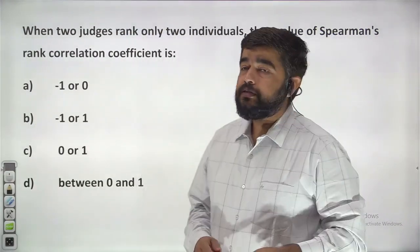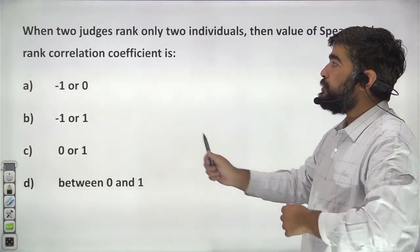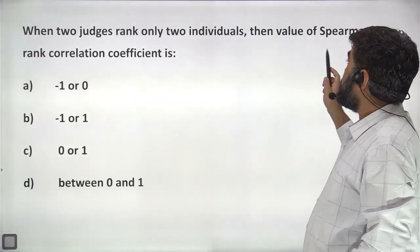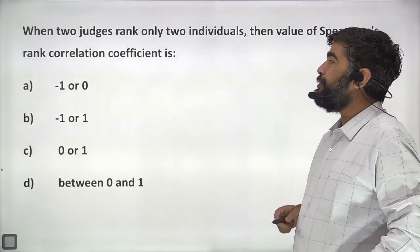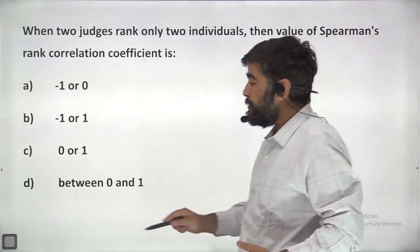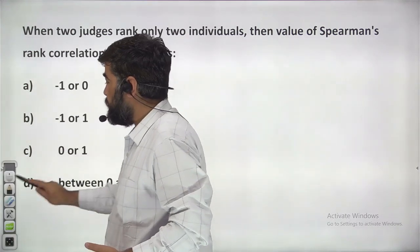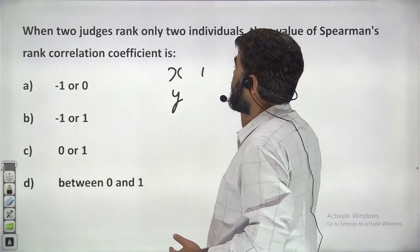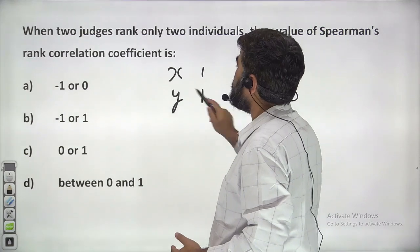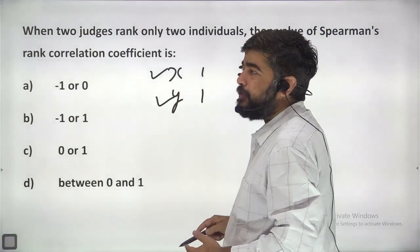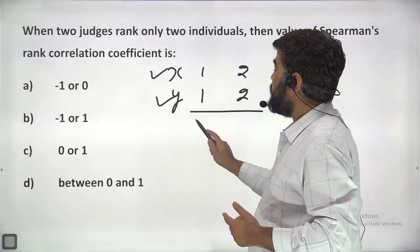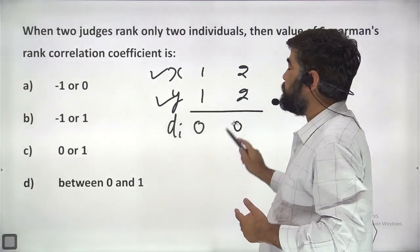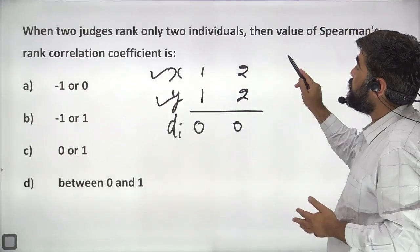Next question is about rank correlation. When two judges rank only two individuals, the value of Spearman's rank correlation coefficient is — it's very simple. You have ranks first and second by judge one, and judge two gives first and second to x and y. The deviation d_i is zero and zero — so rank differences are zero.